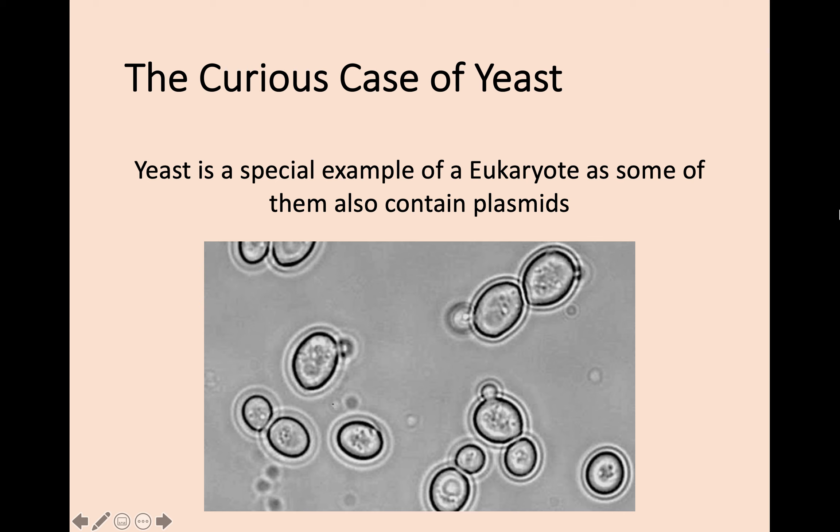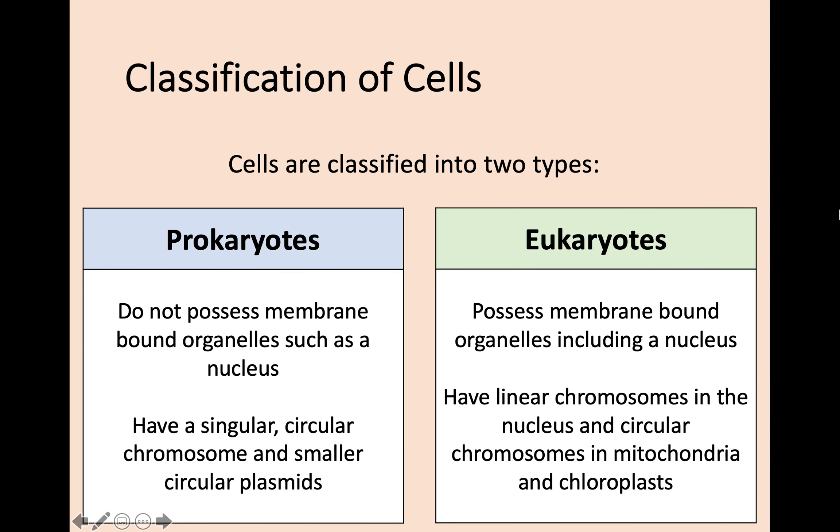One of the only things that might stump you though, if you're being asked to compare these, is yeast. Yeast is a special example of a fungal cell. Although fungal cells do have membrane-bound organelles and a nucleus, yeast, or at least some forms of yeast, do also contain plasmids. So although on the whole you can characterize a prokaryote as having a plasmid, it could also be a yeast cell which is still a eukaryote.